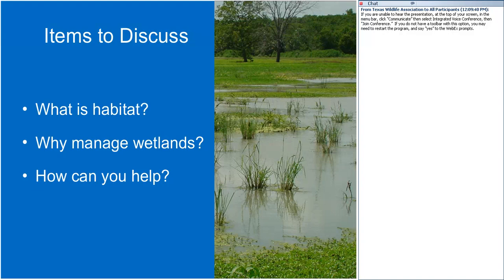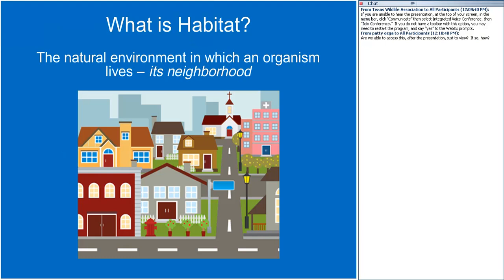So what is habitat? Habitat is briefly stated the natural environment in which an organism lives. Simply put, it's their neighborhood — where they live their life and meet the daily requirements of their life. That includes where they rest, where they sleep, where they find their food, where they find a mate, and also raise young.